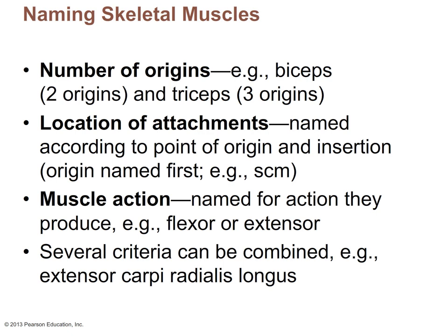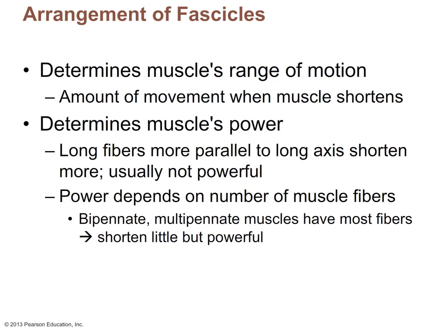While we're on the subject of naming muscles, we should also discuss the arrangement of fascicles. A fascicle is a bundle of muscle fibers held together by connective tissue. The arrangement of fascicles determines the amount of movement when the muscle shortens and also determines the muscle's power. Long, parallel fibers usually shorten more but do not produce a powerful contraction — as seen in the sartorius muscle. Bipennate or multipennate muscles with short fibers shorten less but are quite powerful.